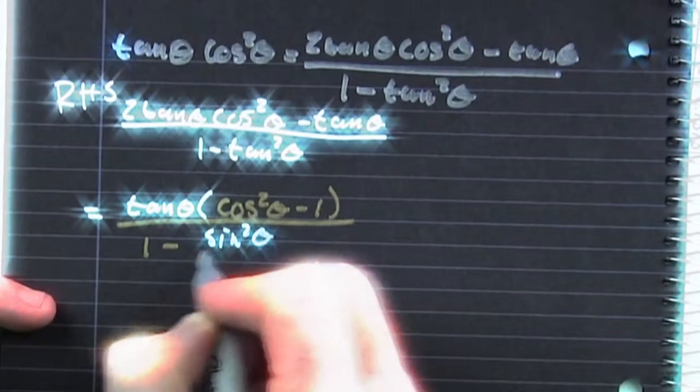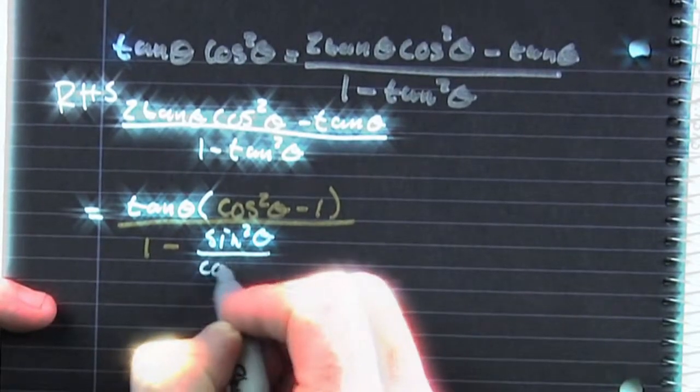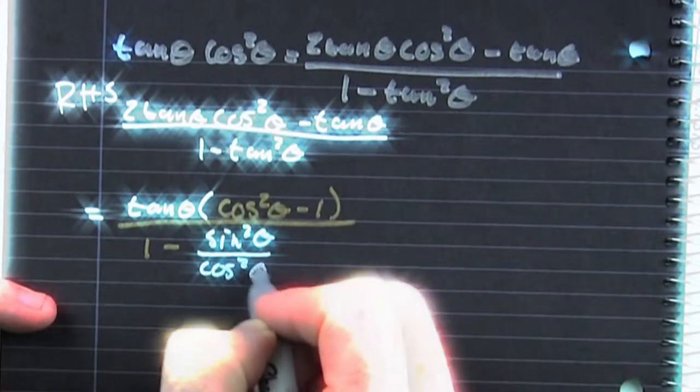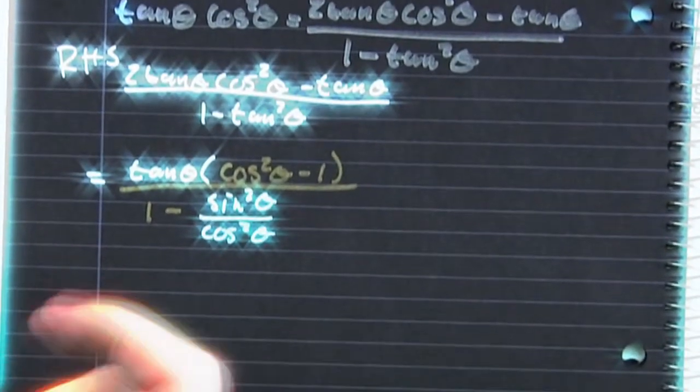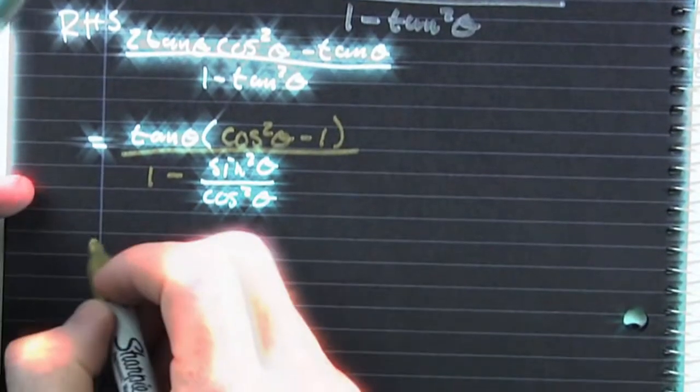The tangent squared theta, which is the sine squared theta over the cosine squared theta — and now what are we going to do?